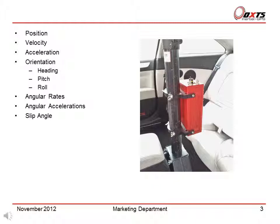What does the RT measure? The RT measures position, velocity, acceleration, orientation — for example heading, pitch and roll — the angular rates, angular accelerations, and the slip angle.